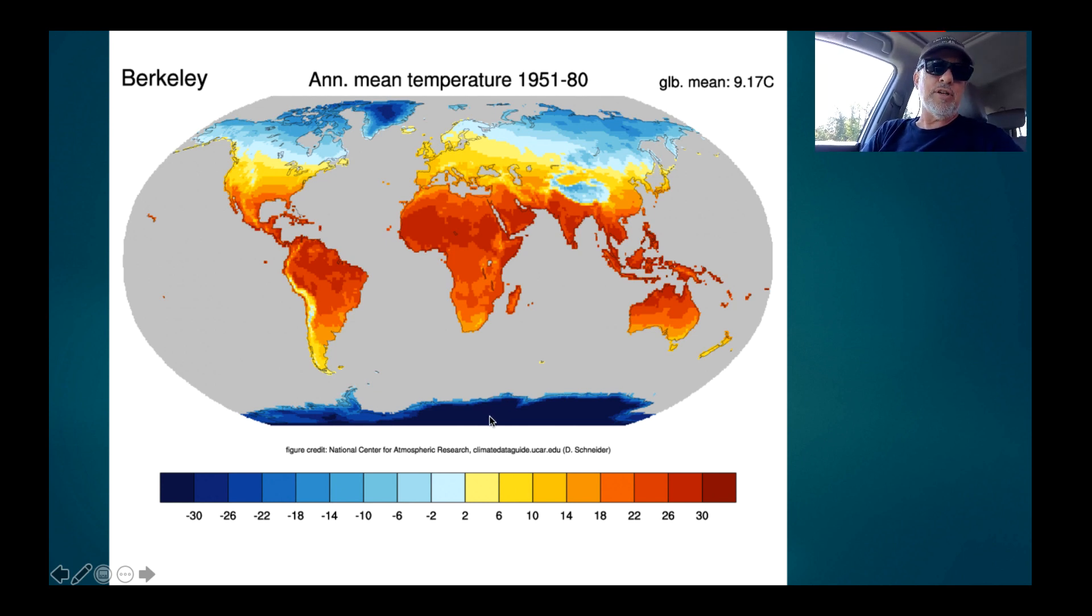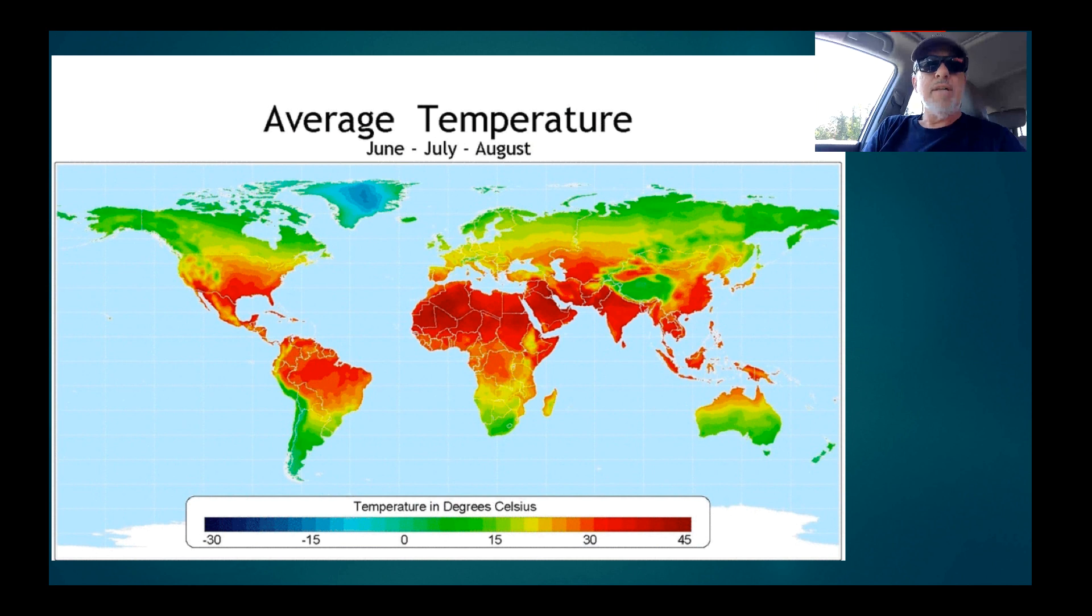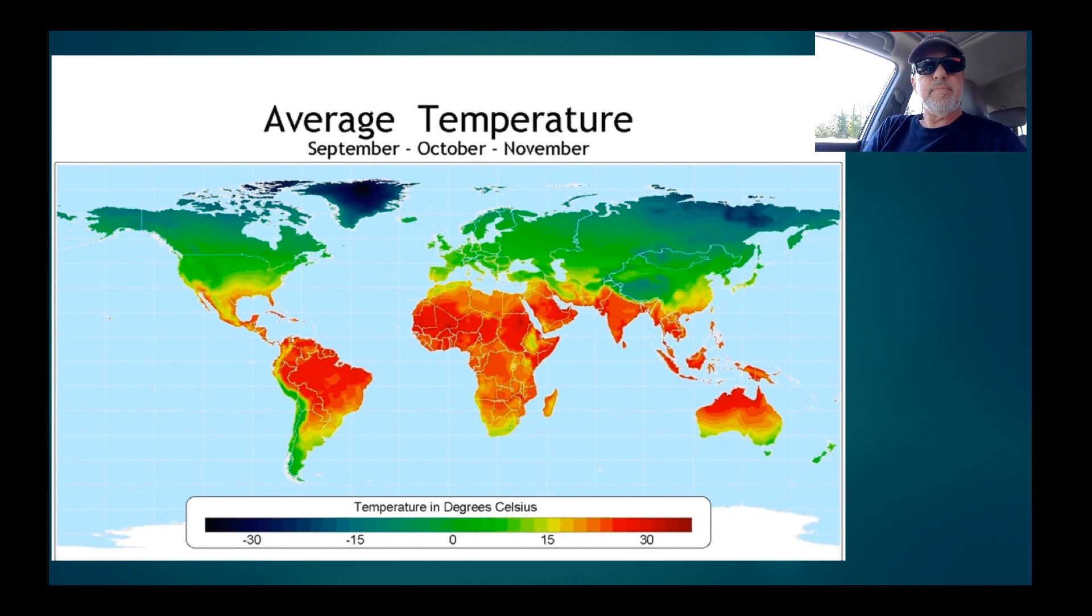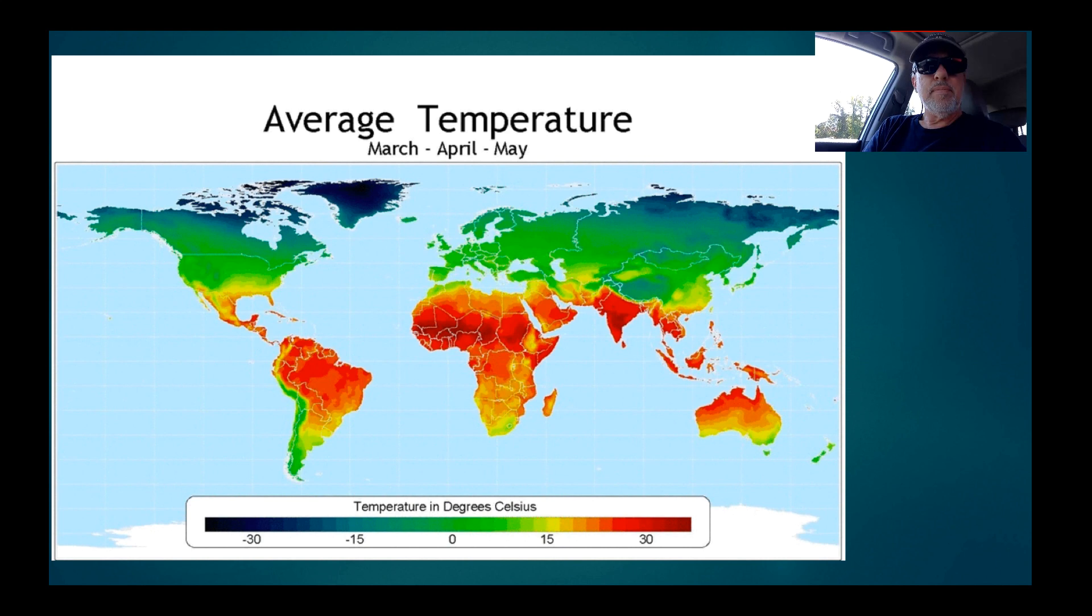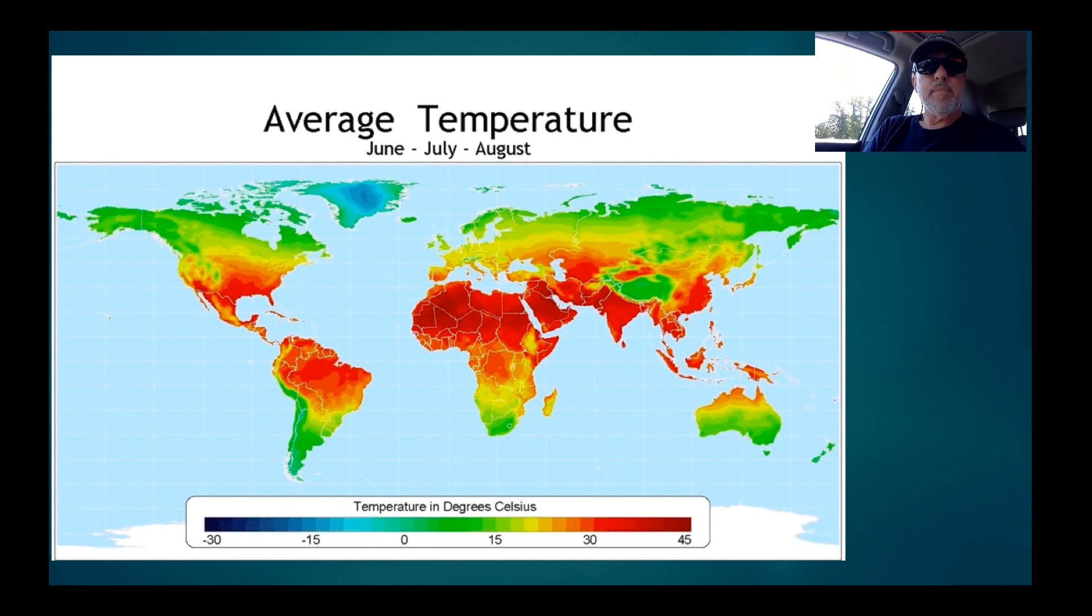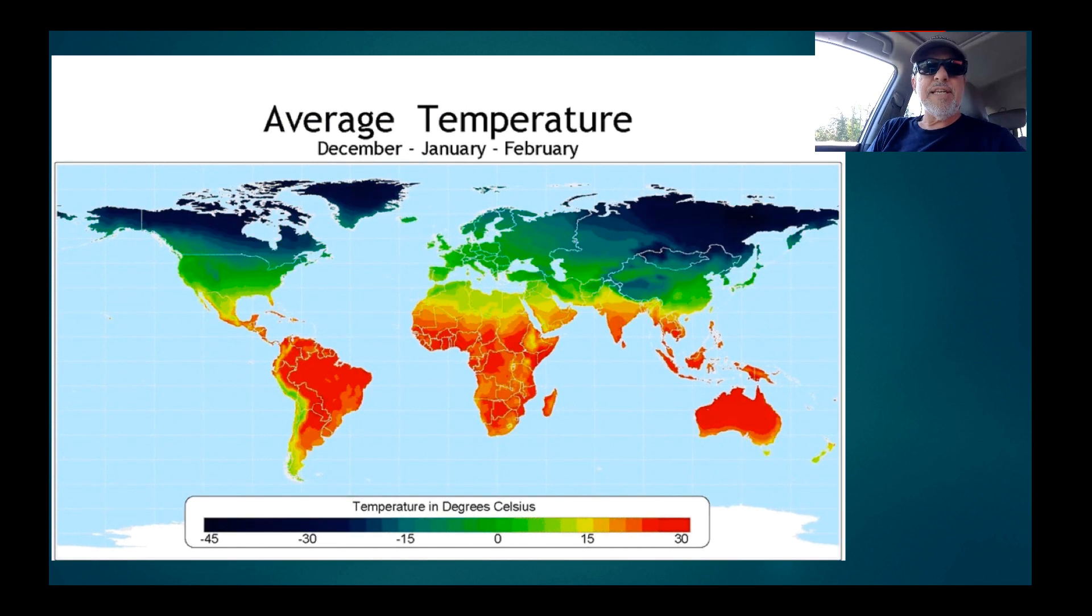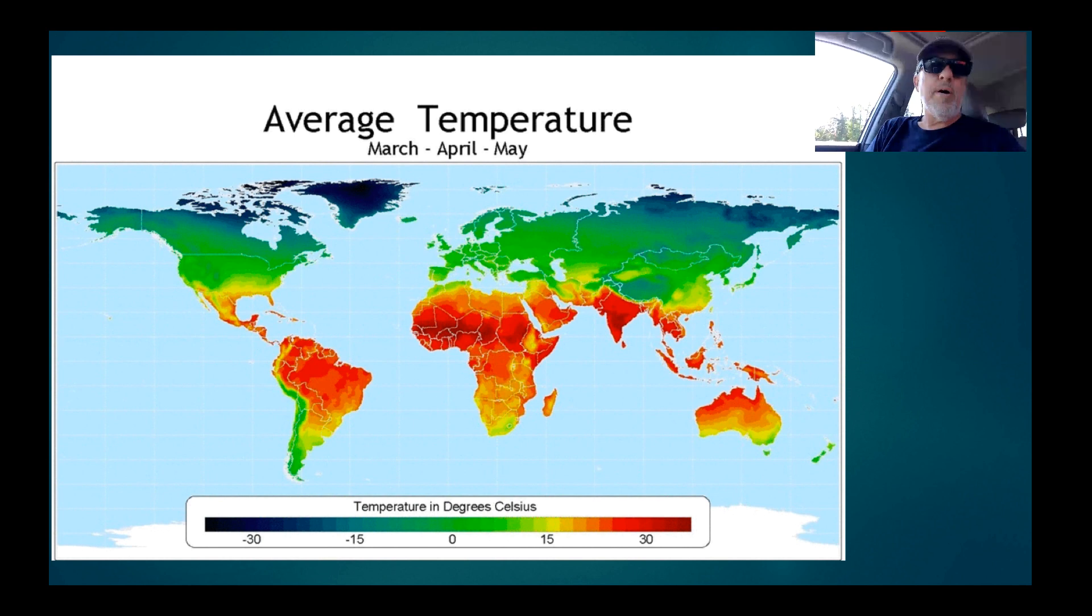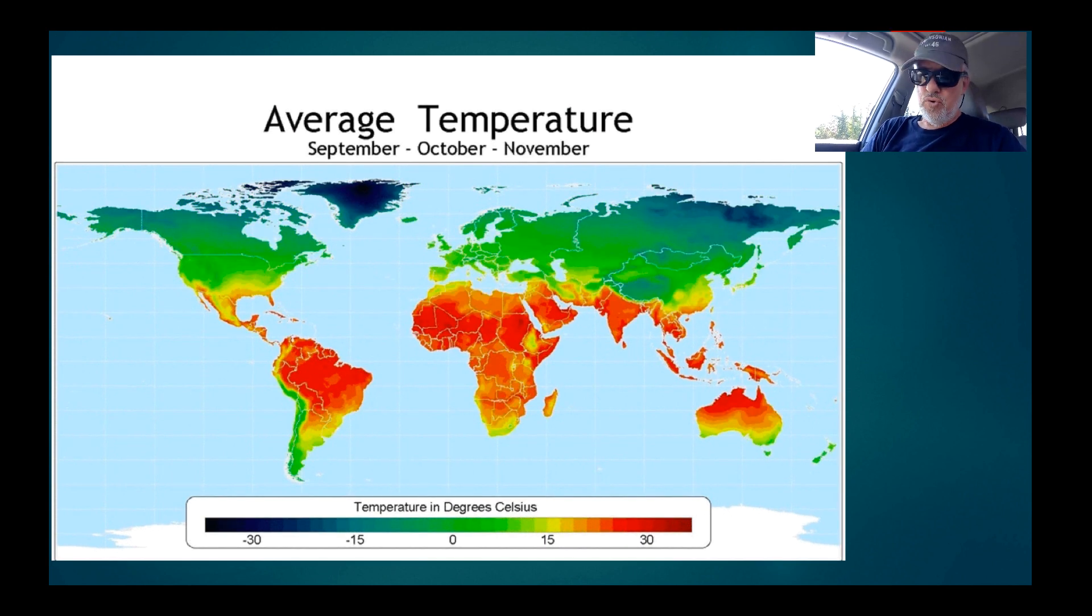Notice that Antarctica is much colder than even the northern extremes. And these are land temperatures because sea temperatures are always moderated compared to land temperatures. This is a GIF of mean annual temperature. You'll see it switches over the course of the year. I'm just going to let you watch it for a while.